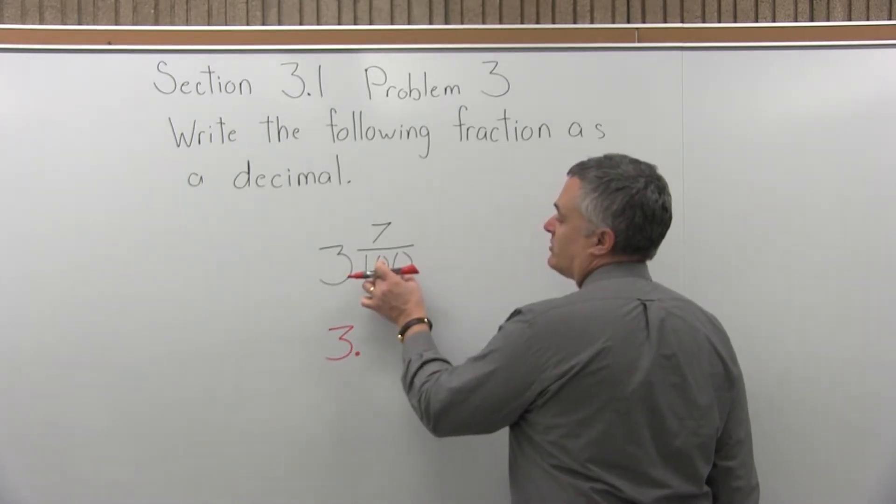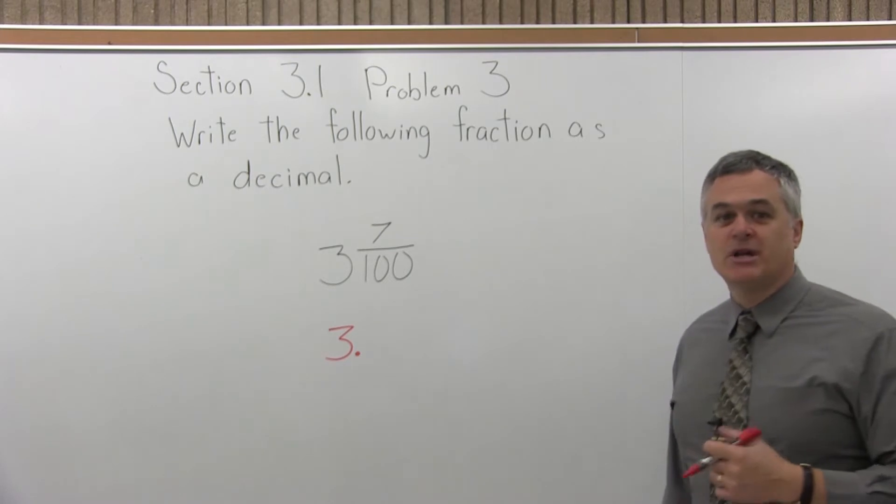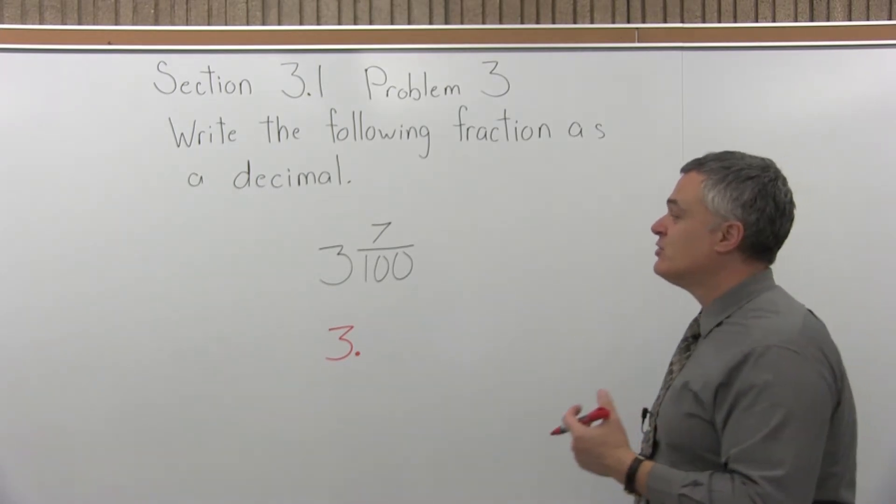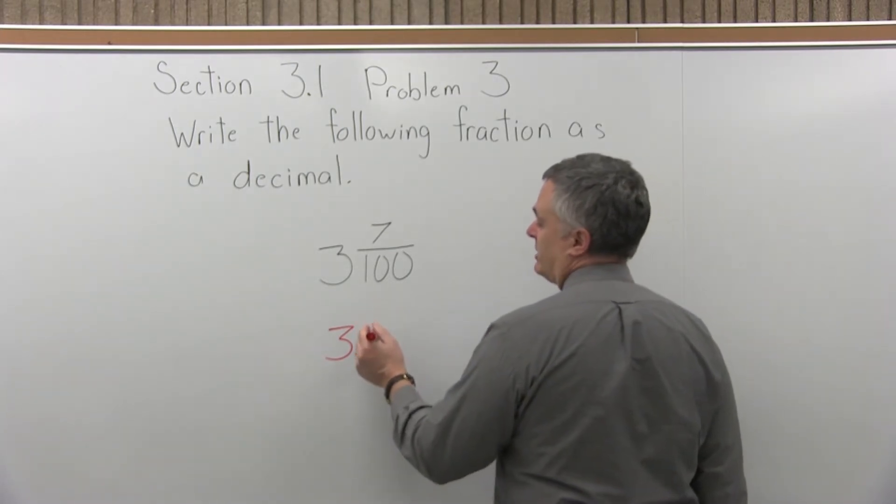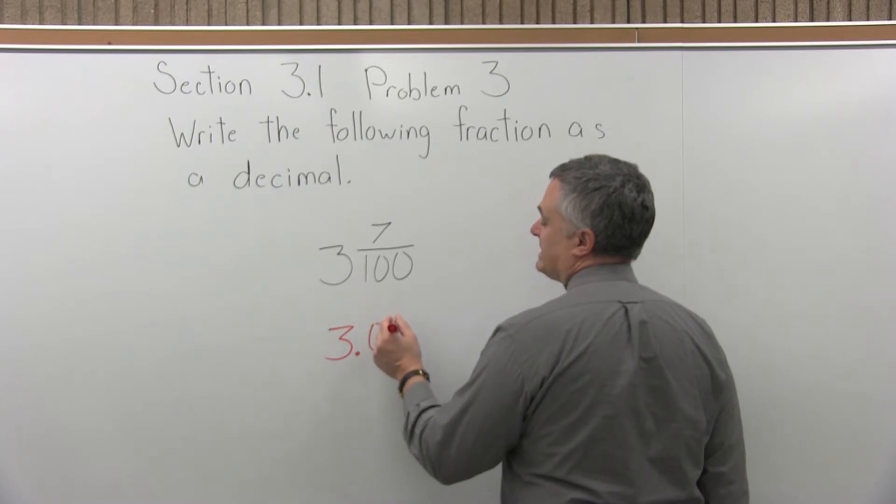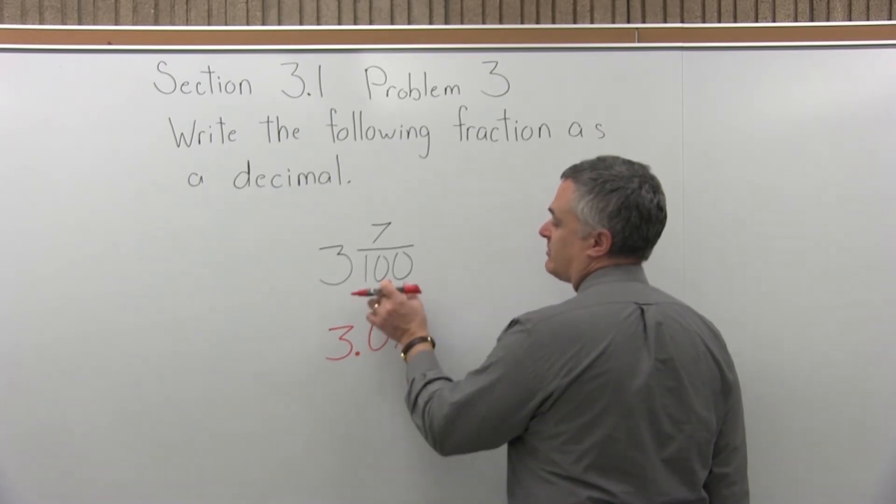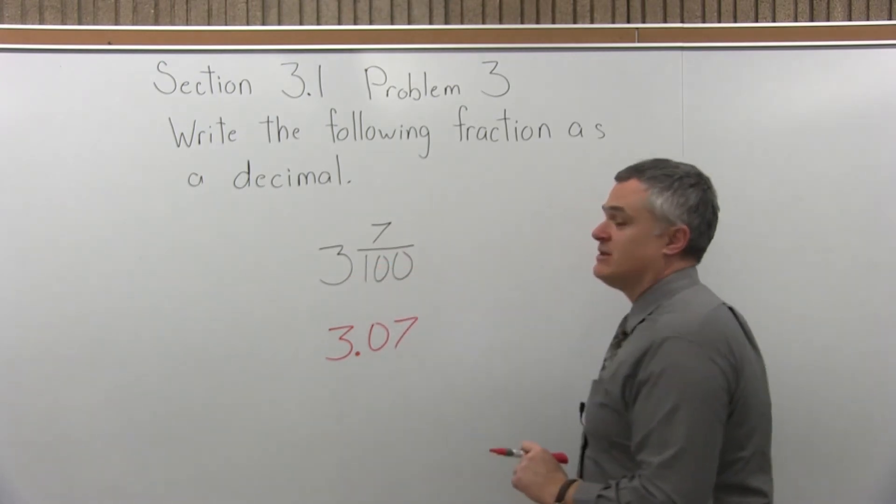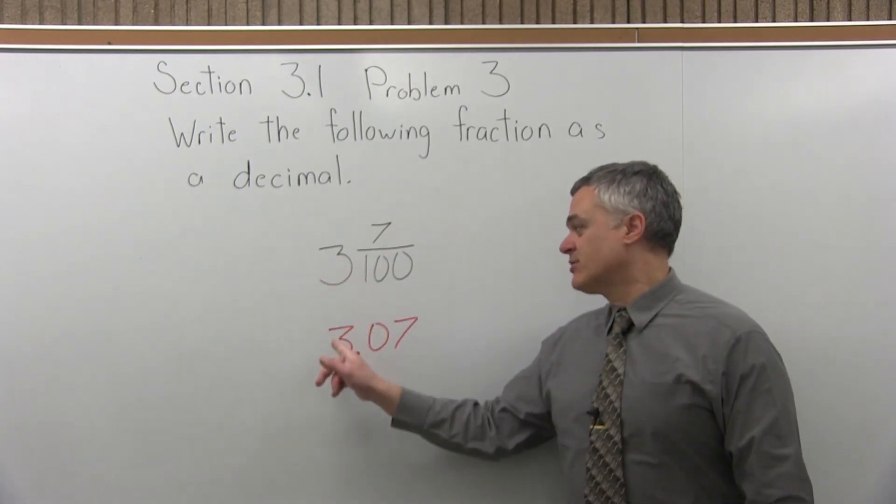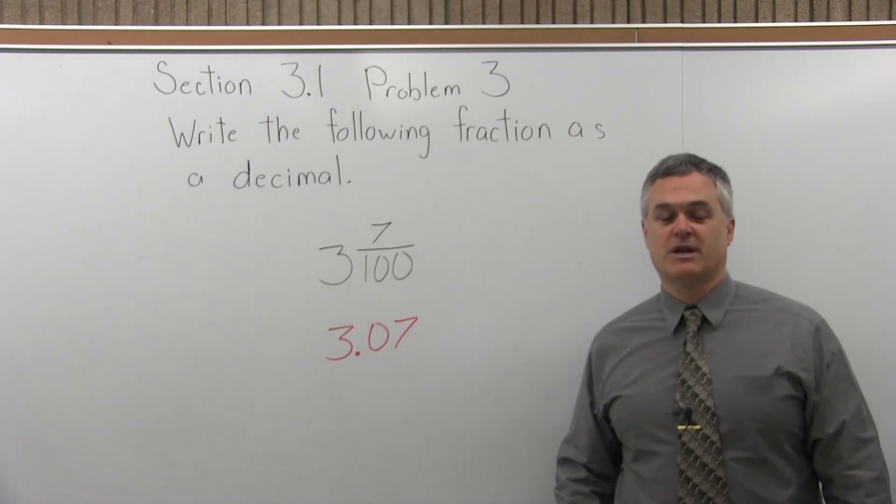So what you want to do is see how many zeros you have in the denominator. There are two zeros in the denominator, two places after the decimal. So if I write it as 3.07, I have two places after the decimal to match up with the two zeros that I have in the denominator, and of course the 3 in front of the decimal, you can't forget about that.